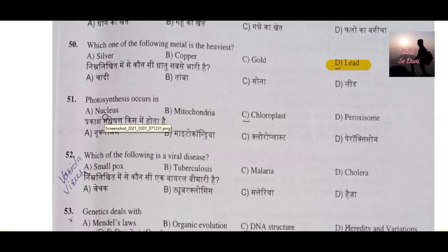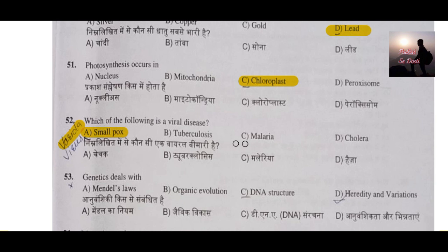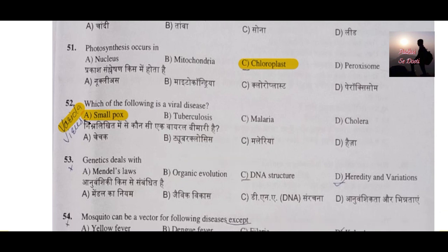In plants, photosynthesis occurs in the chloroplast, not in the nucleus or mitochondria. Question number 52: Which of the following is a viral disease? Smallpox is a viral disease caused by the variola virus. Tuberculosis, malaria, and cholera spread because of bacteria, whereas smallpox is caused by the variola virus.